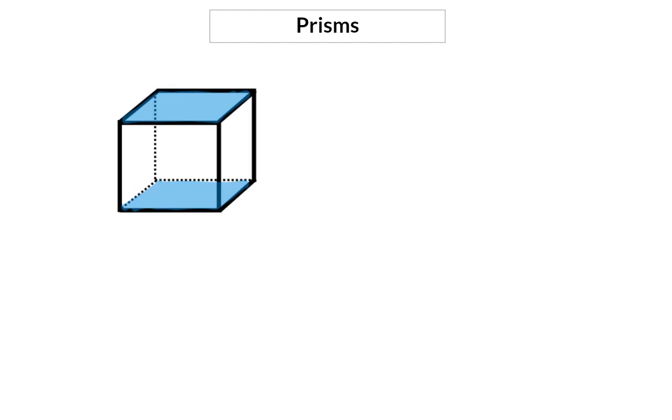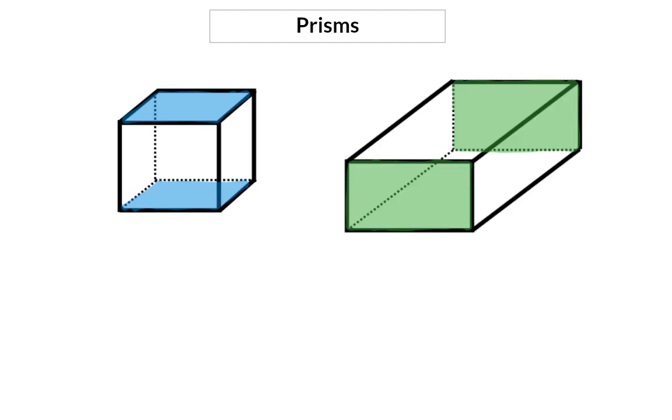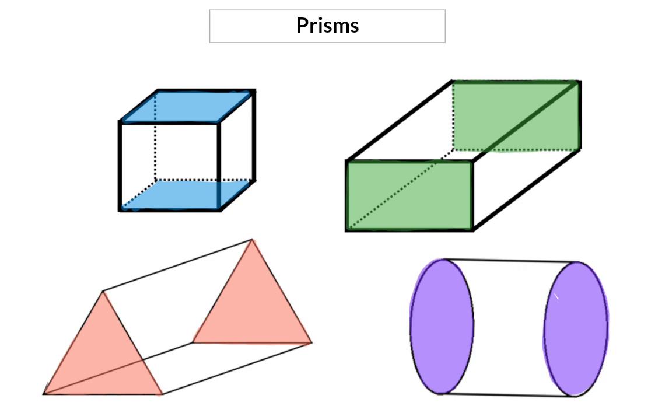A square base shape forms a cube, rectangle forms a rectangular prism, a triangle forms a triangular prism, and later on we'll have a look at the circle which forms a cylinder.